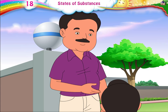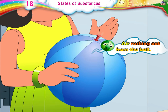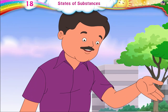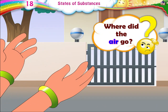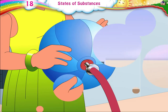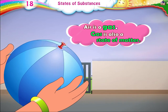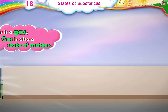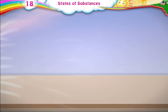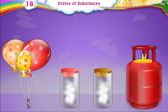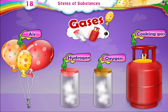I can feel the air rushing out from the ball. Rhea, can you catch the air in your hands? No, Papa. Where did the air go? Look how the ball is changing its shape. Air is a gas. Gas is also a state of matter. Gases do not collect in one place. They spread upwards, downwards, on all sides. That is why you cannot catch air. Air, hydrogen, oxygen, and cooking gas are gases or gaseous substances.